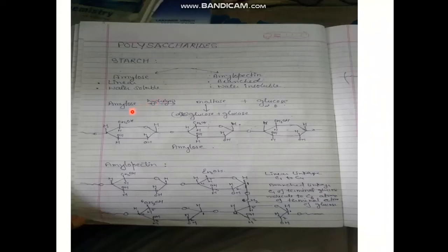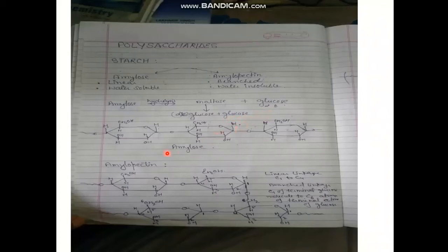Amylose on hydrolysis gives maltose and glucose — specifically alpha-D-glucose units. Maltose on further hydrolysis gives two units of alpha-D-glucose. So amylose is made up of alpha-D-glucose units linked from C1 of one glucose unit to C4 of another, forming a linear chain structure. This oxygen linkage between the monosaccharide units is the glycosidic linkage, and the linear chain structure makes amylose water soluble.